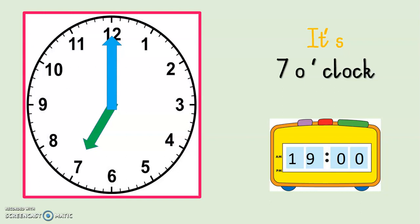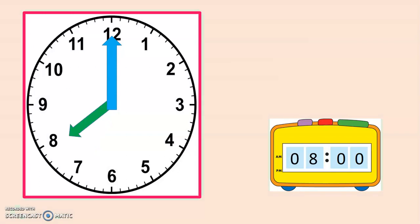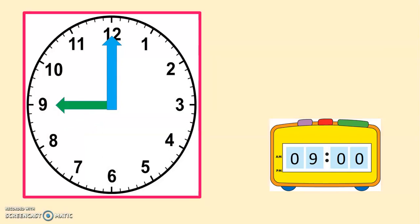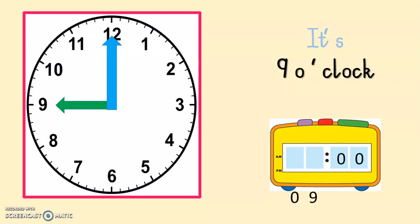It is 8 o'clock. Digital time is 08:00 in the morning. In the afternoon the time will be 20:00, meaning 20 hours have passed. It is 9 o'clock — digital time 09:00. In the evening it is 21:00.